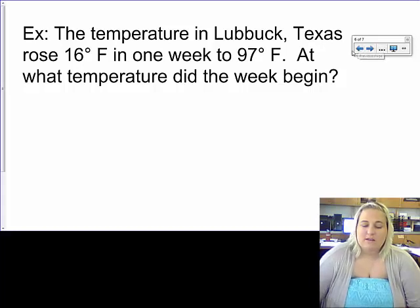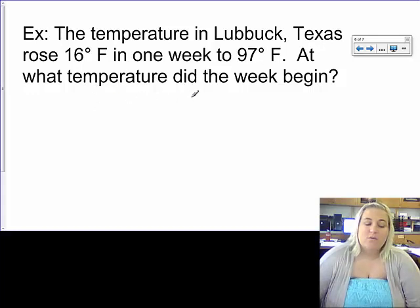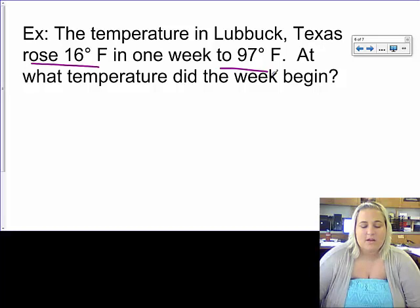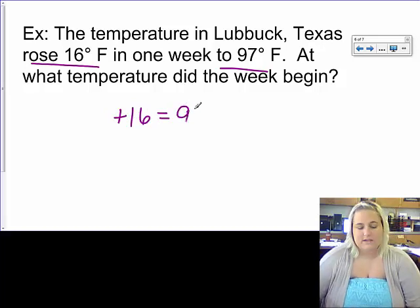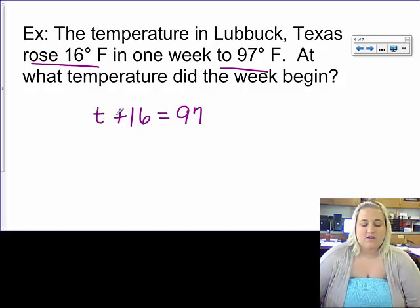The temperature in Lubbock, Texas rose 16 degrees Fahrenheit in one week to 97 degrees Fahrenheit. At what temperature did the week begin? So it says that it rose 16 degrees to 97 degrees. So if it rose, I know that I'm adding 16. And what it rose to is this 97. So whatever happens over here, 16 is being added to it. And it has to equal 97 degrees. So I don't know what the temperature T was before. But I'm going to find out.